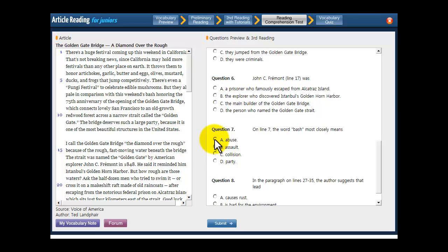Look at the choices. Abuse. Now bash can mean to hit someone. Like I bashed my friend in the face accidentally. But that's not what's going on here. It's not abusive. It's a party. So it's not an assault. That's kind of the same thing. It's like hitting someone. So that's not going to be right either. Get rid of that. Collision. Bash could be a collision. Like he bashed his car against the telephone pole. But not in this case. In this case, you're looking for party. Fortunately, D is exactly what we're looking for. Party. So you choose that. You get it right. And you throw yourself a party. Because you did so well on this article's questions.